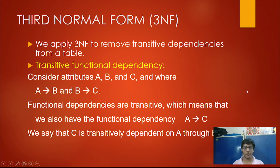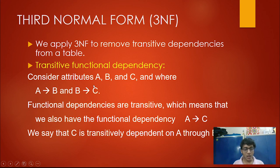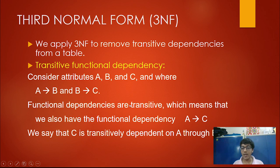The third normal form (3NF) is applied to remove transitive dependencies. A transitive dependency occurs when A determines B and B determines C — from this we can assume A also determines C, so C is transitively dependent on A through B. For example, with attributes employee number, employee email, department number, department name: department number is determining department name, so department name is transitively dependent on employee number through department number.